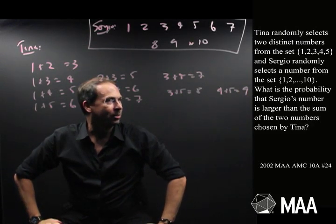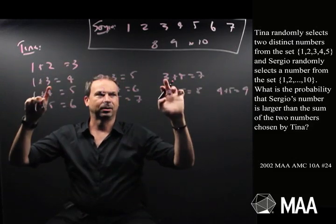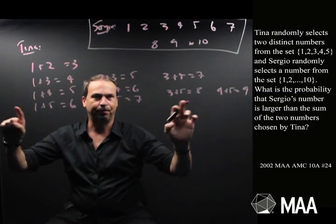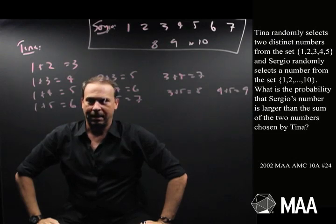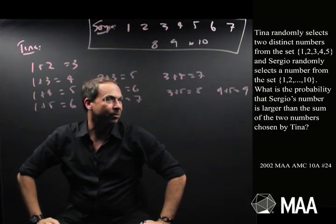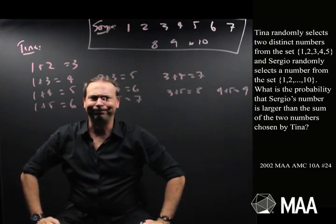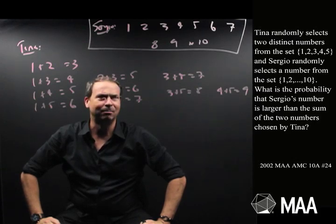And I want to know, what's the chance that Sergio's number, one of these guys, is larger than one of the sums here? So, alright, well I guess I've already embarked on a strategy, strategy number 7, which is just persevere. I guess I've listed all the possibilities. So, let's see. How do I think about this now? How do I persevere some more?